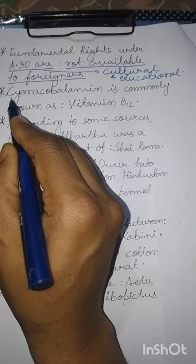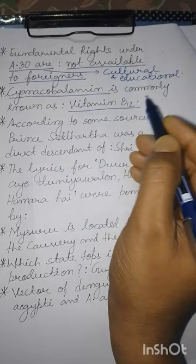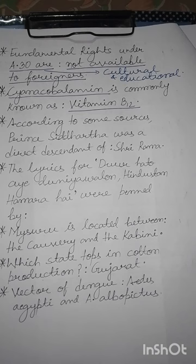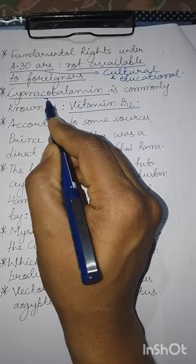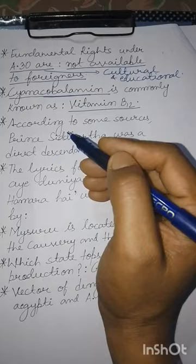This one you have to read carefully. Cyanocobalamin is commonly known as Vitamin B12. Cyanocobalamin को हम Vitamin B12 के नाम से जानते हैं। What you have to notice is that Vitamin B12 contains cobalt — as its name 'cobalamin' suggests, it contains cobalt.